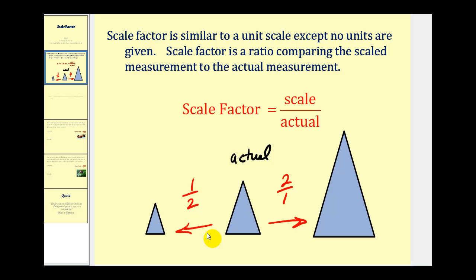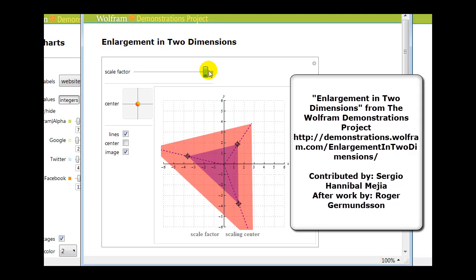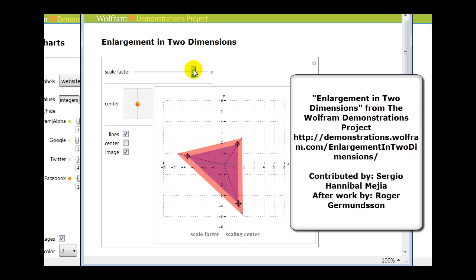Let's take a look at an animation of scale factor. When the scale factor is larger than one, as we see here, the scaled triangle is larger than the actual triangle. And if the scale factor is less than one, the scaled triangle would be smaller than the original triangle, as we see here. Notice that the triangles do stay proportional to one another when working with scale factor.